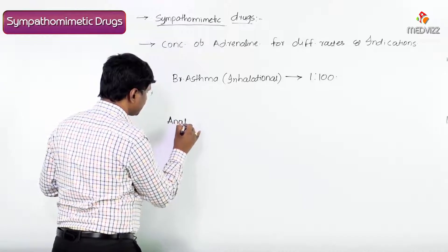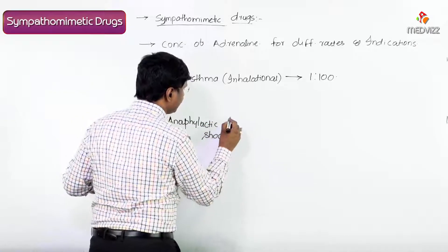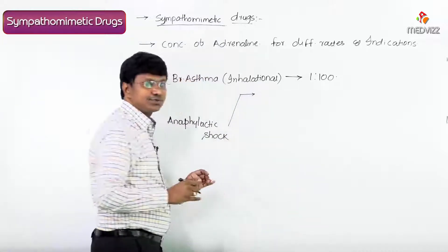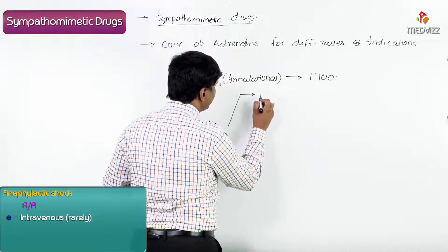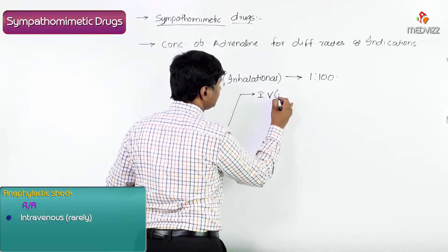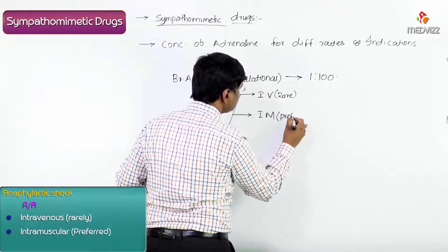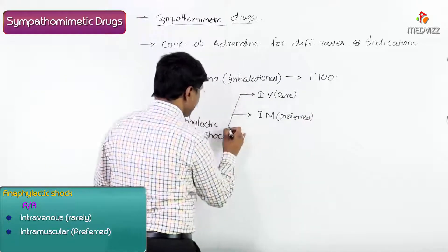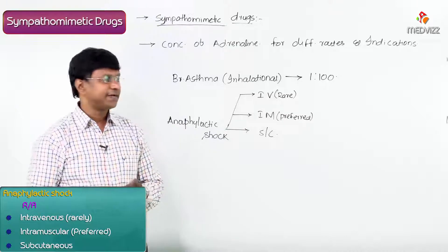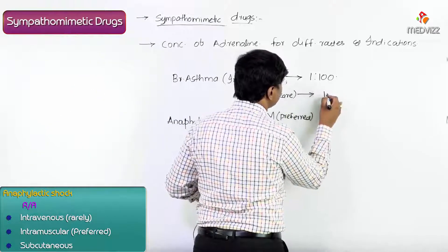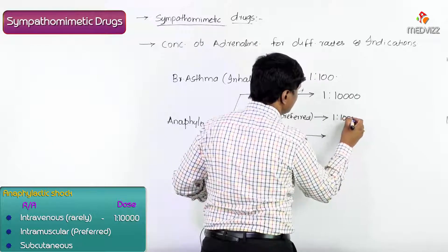In case of anaphylactic shock, adrenaline can be given via various routes. It can be given intravenously, but this is very rare. The preferable route is intramuscular, and it can also be given subcutaneously. When giving by intravenous route, the dilution should be 1:10,000, and for intramuscular as well as subcutaneous routes, the concentration is 1:1000.